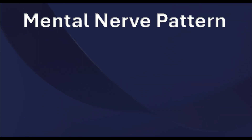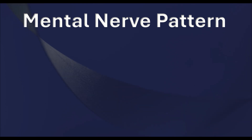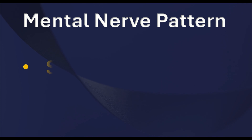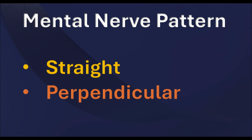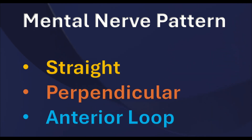Now let me tell you the types of mental nerve patterns or pathways. Before reaching the mental foramen, the mental nerve can follow one of three patterns: straight, perpendicular, and anterior loop.